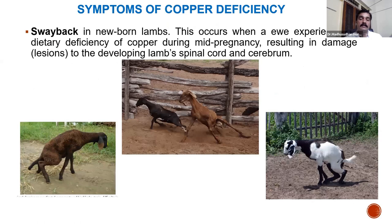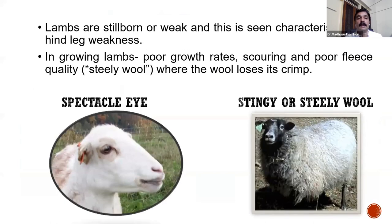The major symptom of copper deficiency is swayback in newborn lambs. This occurs when an ewe experiences dietary copper deficiency during mid-pregnancy, resulting in lesions in the developing lamb's spinal cord and cerebrum. Affected lambs may be stillborn or weak, characteristically showing hind leg weakness. Other symptoms include spectacle eye — a distinctive periocular discoloration — poor growth rate, and poor fleece quality known as steely wool.